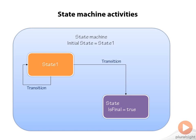The state machine is really just another activity to provide control flow. It's composable with other activities. There are very few activities that you see in the toolbox when it comes to designing the state machine. You have the state machine itself, you have a state, and you have a final state. The state machine is the main container, and it's going to have a property pointing to the initial state — that tells it where to start when we execute it.